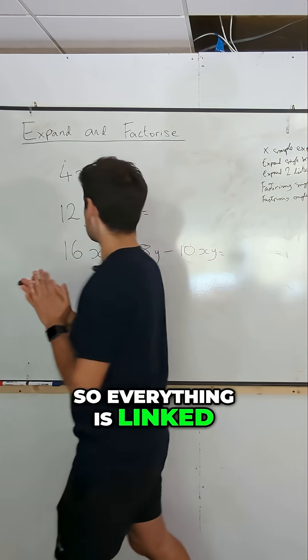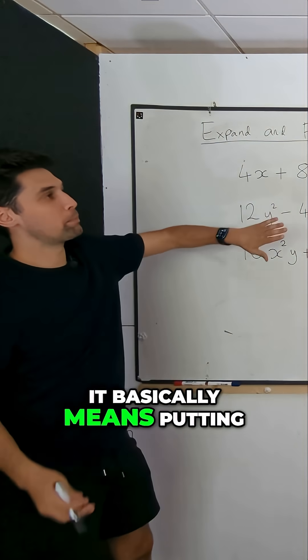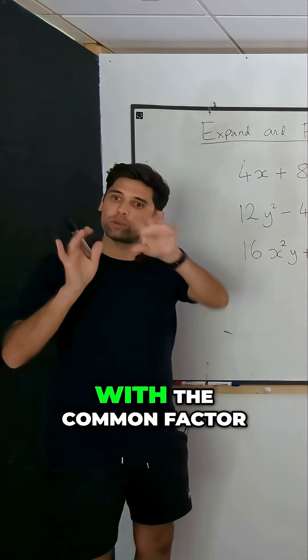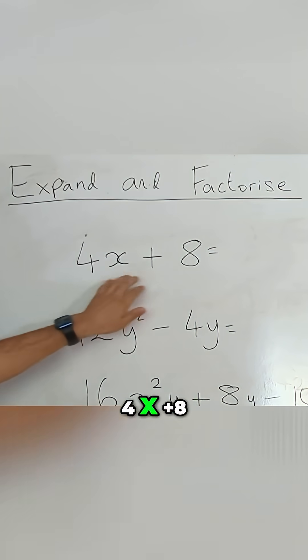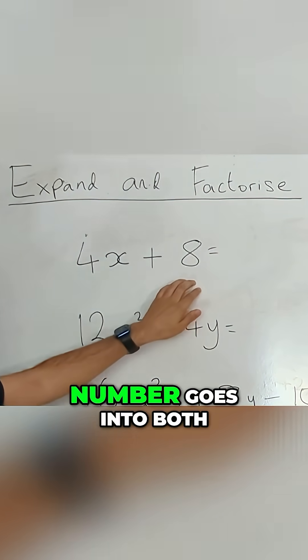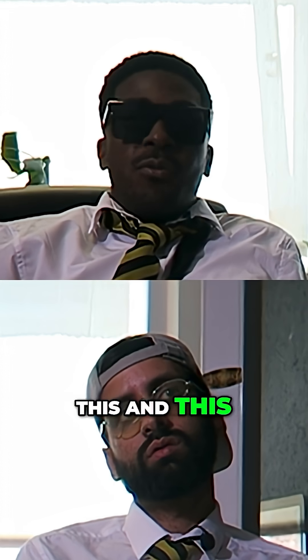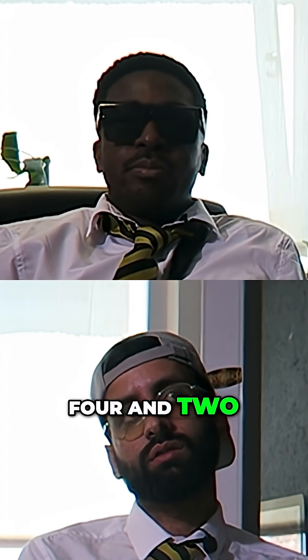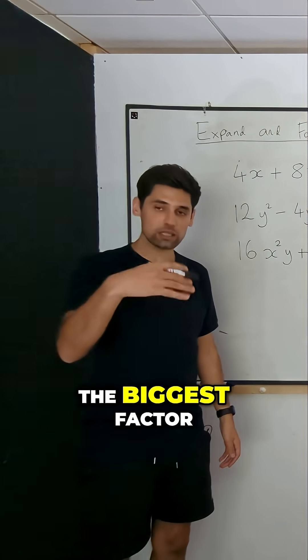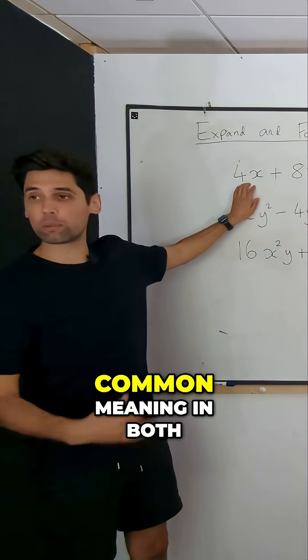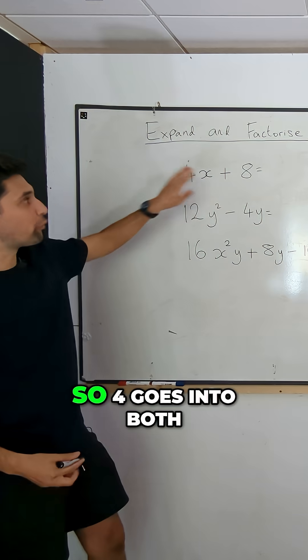Whoa, everything is linked! Mind blown. So when we're trying to factorize something, it basically means putting it into a bracket with the common factor on the outside. So when we look at this, 4x plus 8, what number goes into both this and this? Four and two. Exactly. We always want to try and find the biggest number, the biggest factor, the biggest common factor. Common meaning in both. Yeah, so four goes into both.